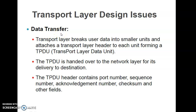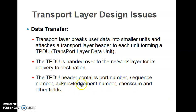For data transfer, the user data passed to the transport layer is broken into smaller units and attached with a TPDU — Transport Protocol Data Unit. This TPDU is handed over to the network layer for delivery to the destination. The important fields in the header include port number, sequence number, acknowledgement number, and checksum. Port number handles addressing; sequence and acknowledgement numbers handle connection management; checksum handles error control.